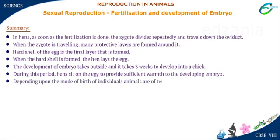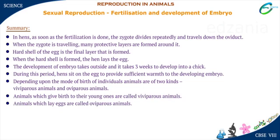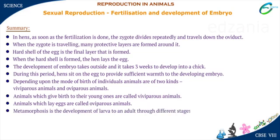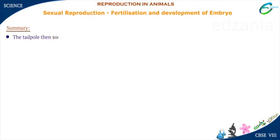Depending upon the mode of birth of individuals, animals are of two kinds: viviparous animals and oviparous animals. Animals which give birth to their young ones are called viviparous animals. Animals which lay eggs are called oviparous animals. Metamorphosis is the development of larva to an adult through different stages. In frogs, the egg develops into a tadpole larva which can swim but cannot jump, and it looks different from the adult frog. The tadpole then transforms into an adult frog capable of jumping.